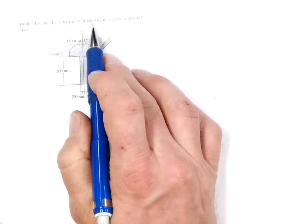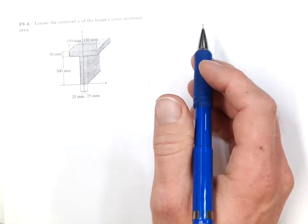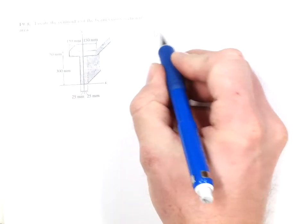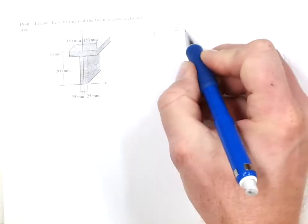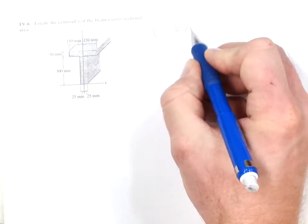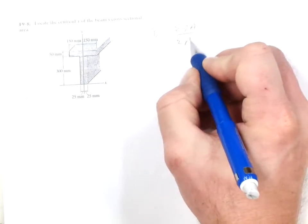Locate the y bar of the beam's cross-sectional area. So let's start with the equation y bar equals the sum of y squiggly a over the sum of a.